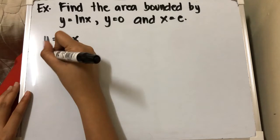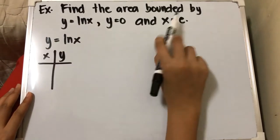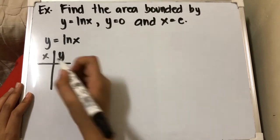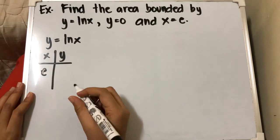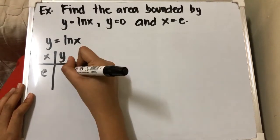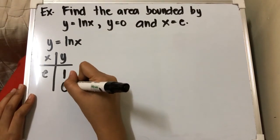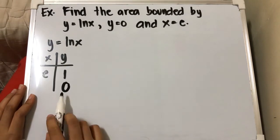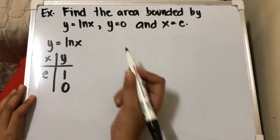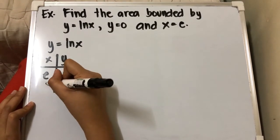If we substitute some values to our x and y — it is said that the area is bounded by x equals e. So if we substitute x by e, meaning ln of e, that is equivalent to 1. And in order to get y equals 0, if we substitute y equals 0, we can find the value of x — if y equals 0, our x is equivalent to 1.